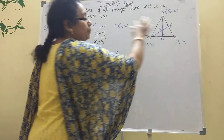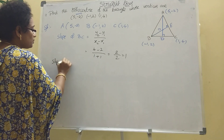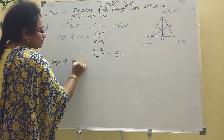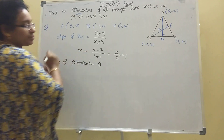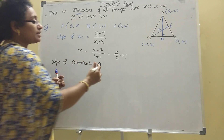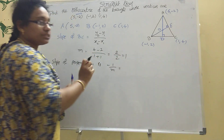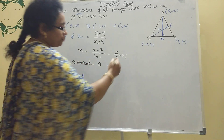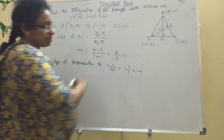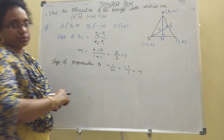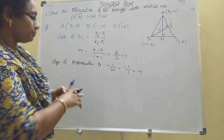Now we want the perpendicular slope. The perpendicular slope formula is -1/m. Here m = 1, so -1/m = -1/1 = -1. So the perpendicular slope is -1.